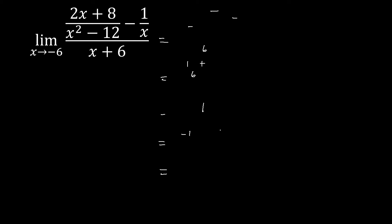We can try to simplify by having a single fraction on the numerator, and later on a single fraction for the entire function. We start with the limit and express the numerator as a single fraction by getting our LCD — the collection of all the denominators taken as factors, making sure they have nothing in common. So we have x times (x squared minus 12).